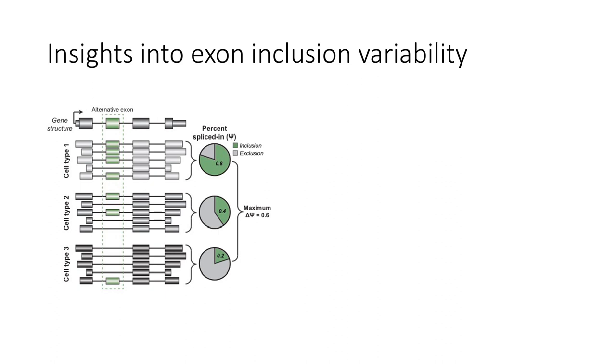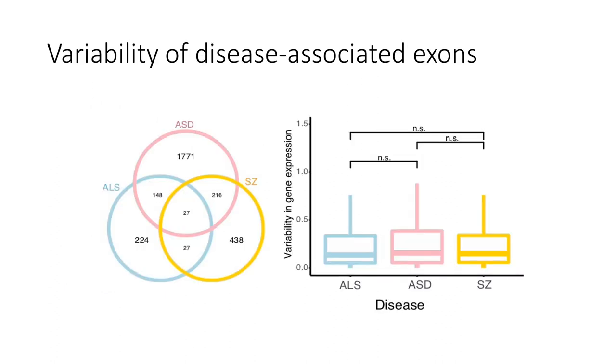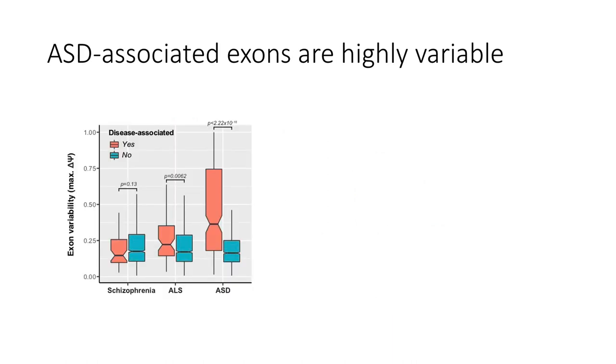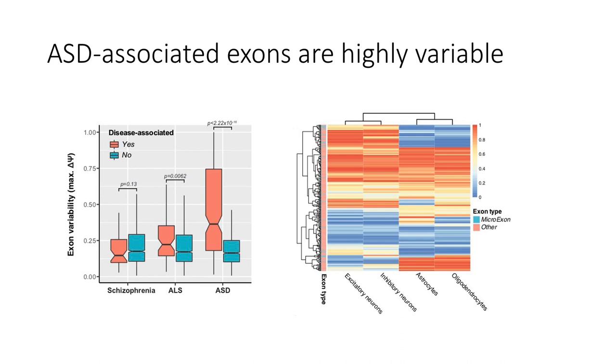So the first thing I did was look at disease associated exons. So we looked at ALS, ASD which is autism spectrum disorder, and schizophrenia, and as a sanity check we made sure that there is no variability in gene expression. However when you look at the exon variability there is a pretty high significant difference when you look at the ASD specific exons.